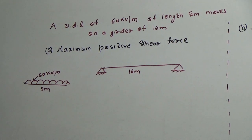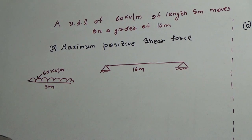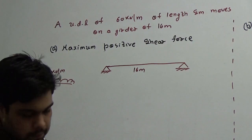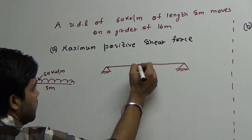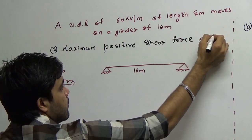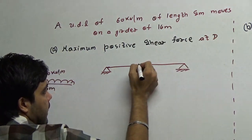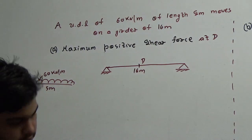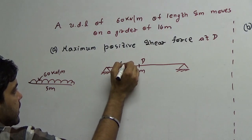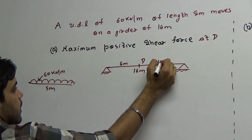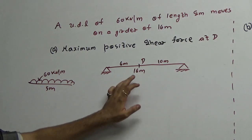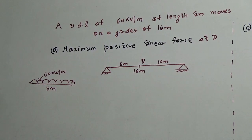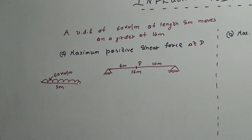This is the girder. We are asked to find the shear force at point D, which is located at a distance of 6 meters from one end and 10 meters from the other.